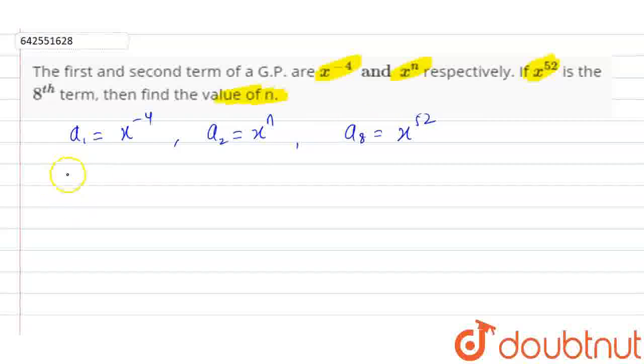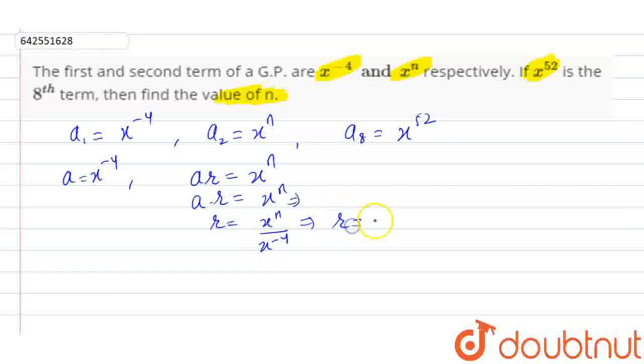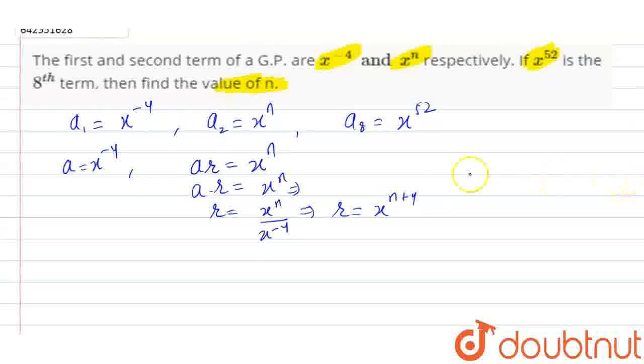Now, in GP, a is equal to x to the power minus 4, and the second term ar is equal to x to the power n. So a into r is equal to x to the power n. So a is x to the power minus 4, so r is equal to x to the power n upon x to the power minus 4. So r is equal to x to the power n plus 4.